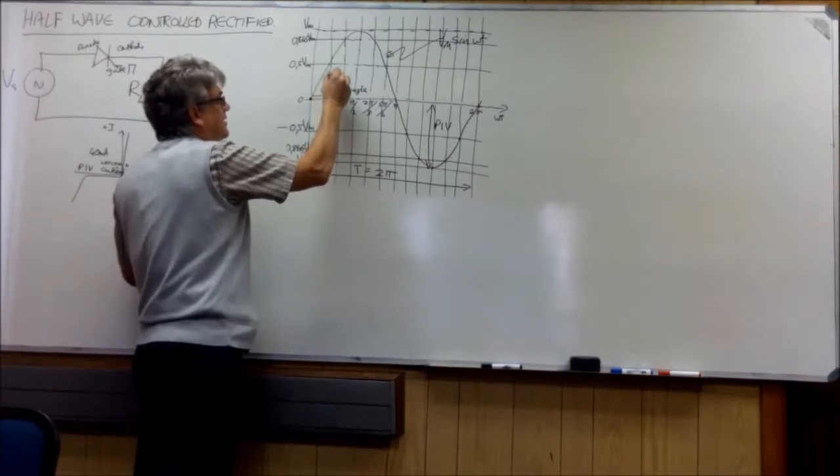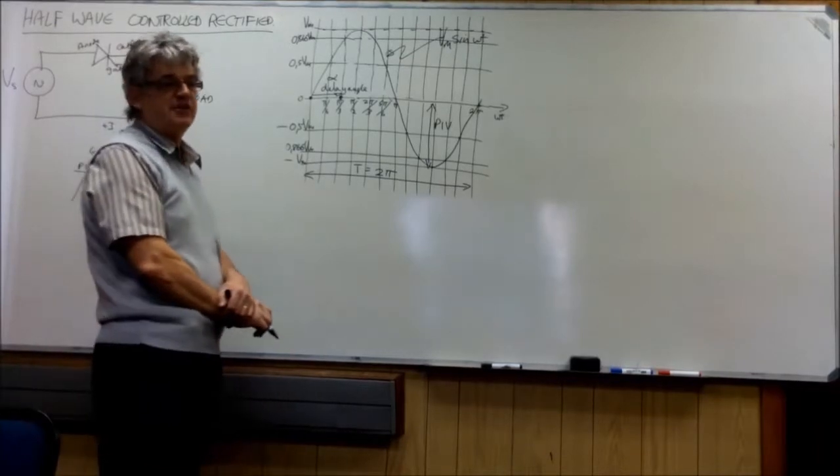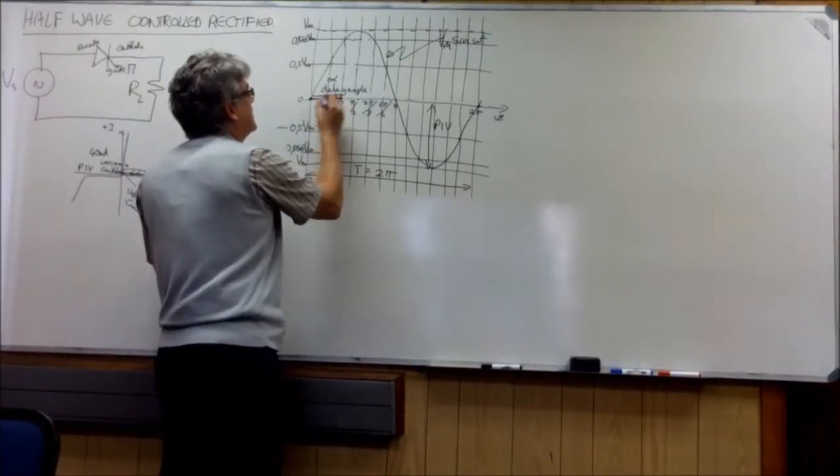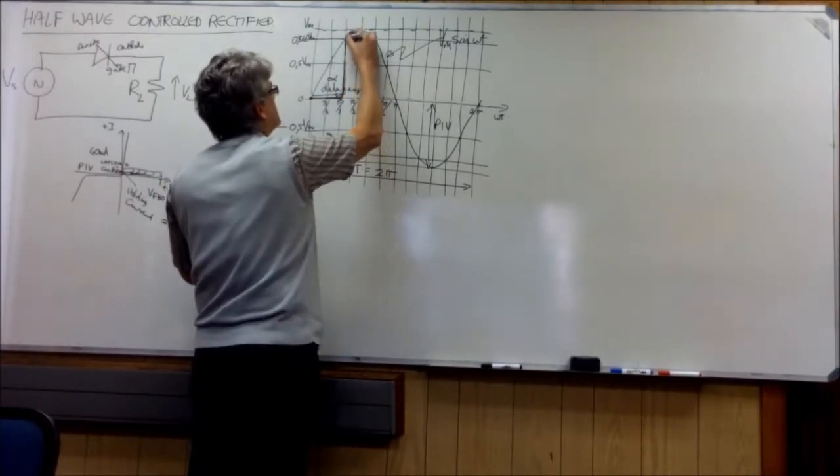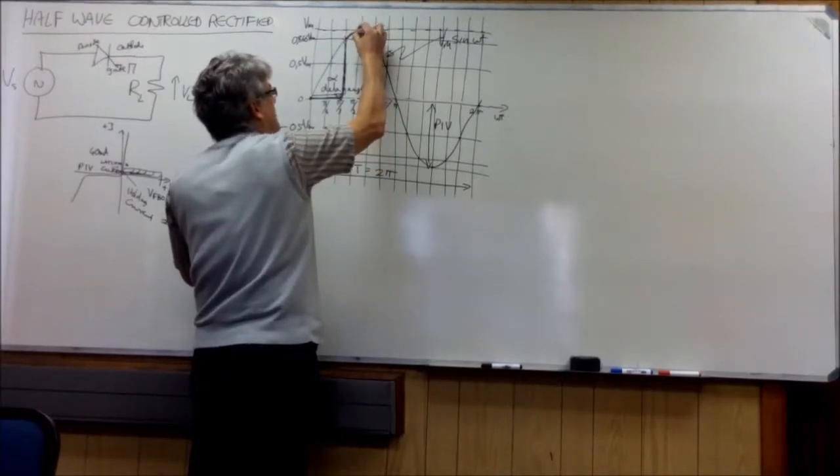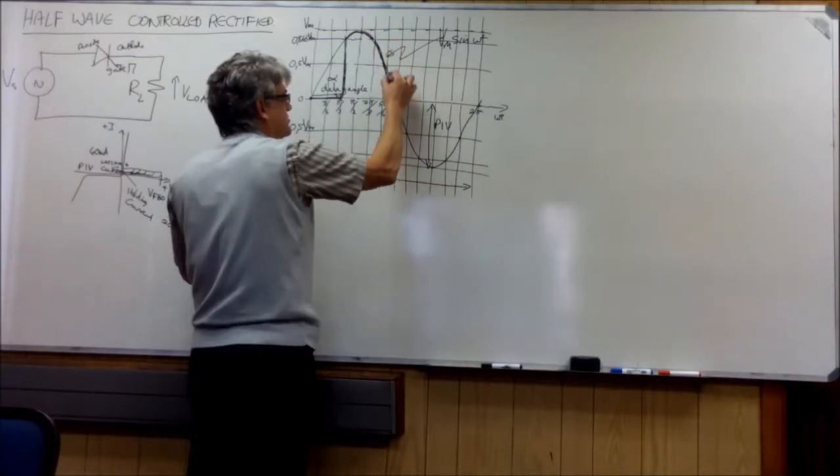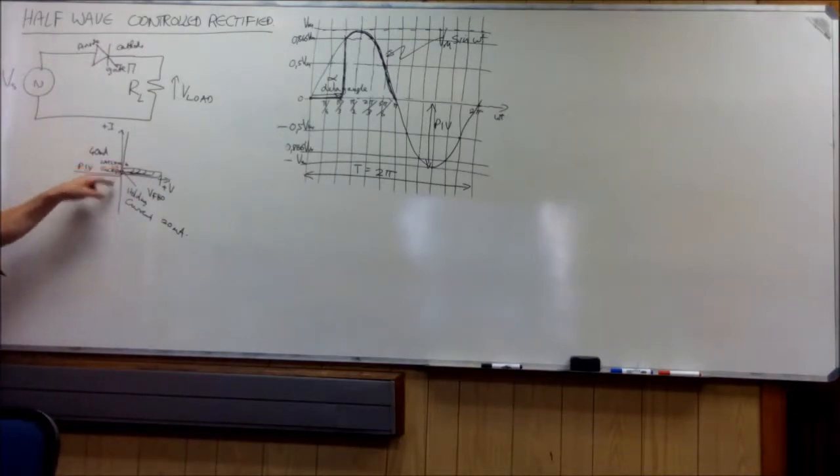is called the delay angle. The delay angle is alpha. And now the wave shape that you will see over the load will be zero from here to there. And then it will go up to the supply voltage because the device was off until there. And then it will follow the supply voltage until we reach this point here. At that point there, the current will go below the holding current. We go to zero. The device will switch off.